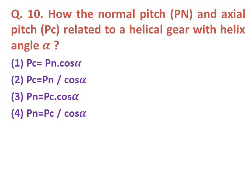Question ten: How are the normal pitch Pn and axial pitch Pc related in a helical gear with helix angle alpha? The correct answer is option two: Pc equals Pn upon cos alpha — the axial pitch equals the normal pitch divided by cos alpha.